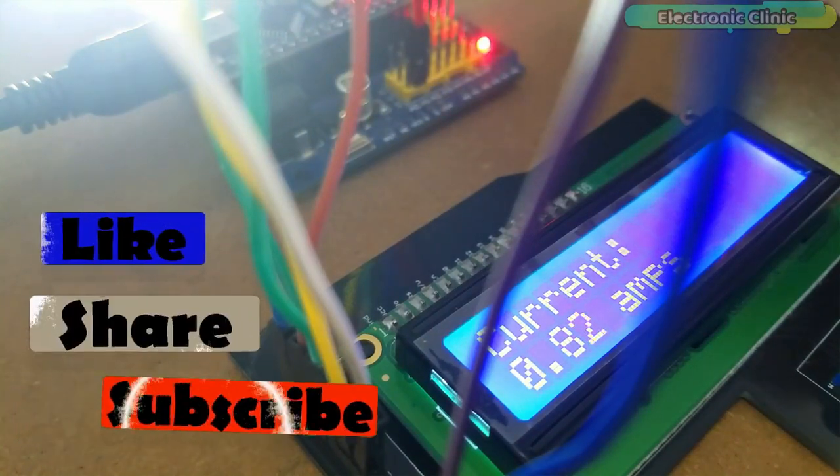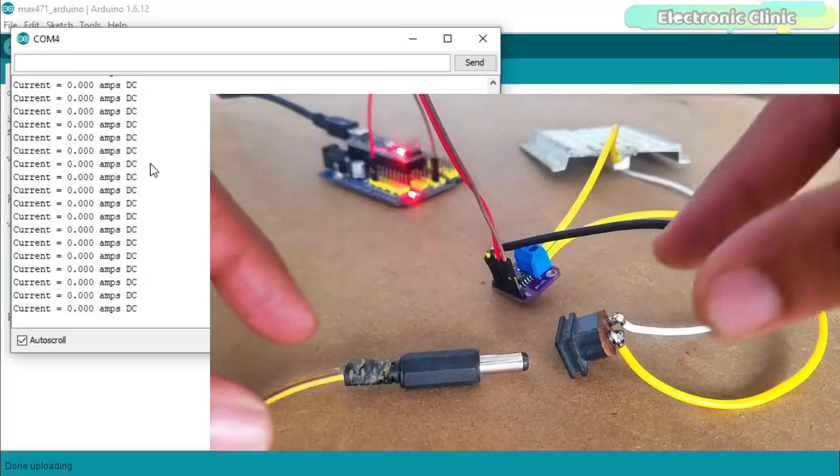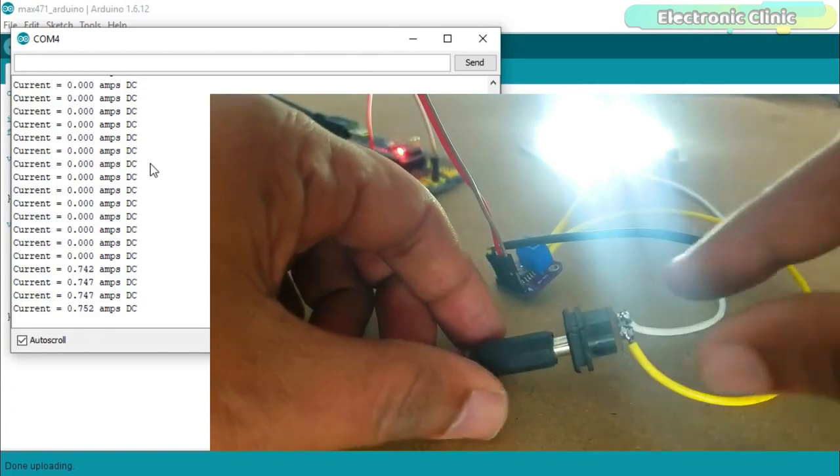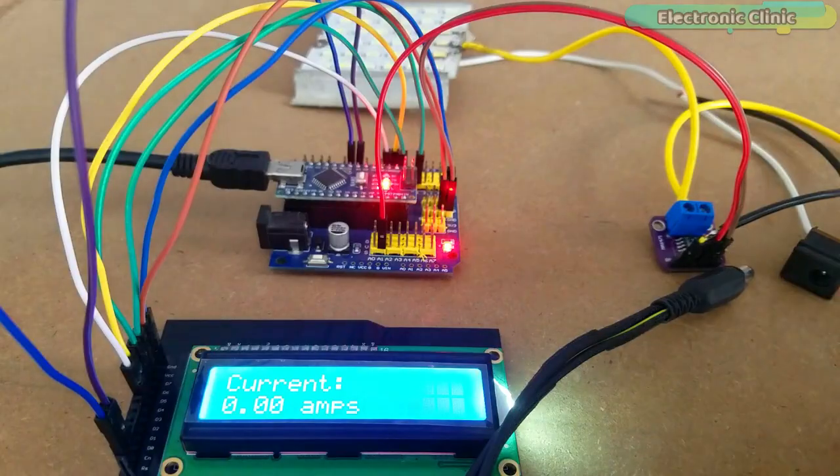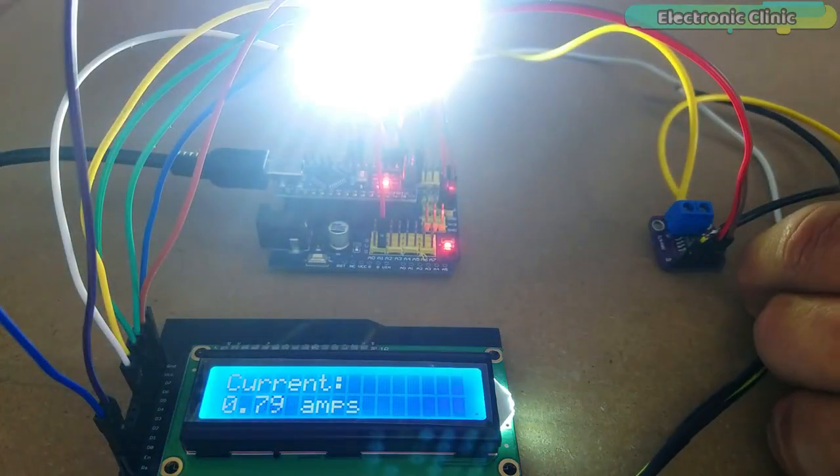We will measure the current of a 12 volt DC MC PCB LED module. We will display the current value on the serial monitor and later we will modify the code and circuit connections to display the current value on 16 into 2 LCD.